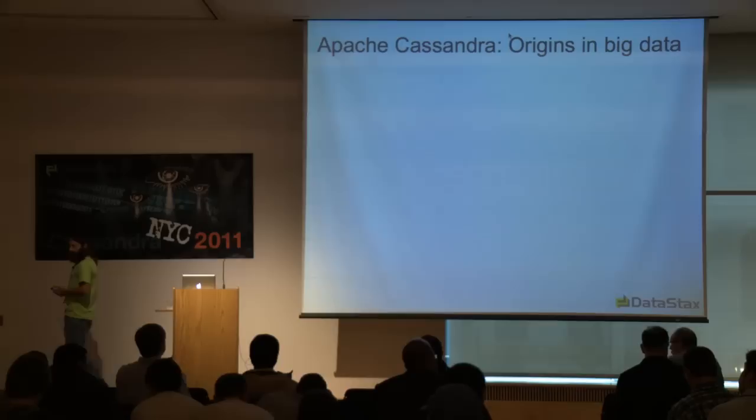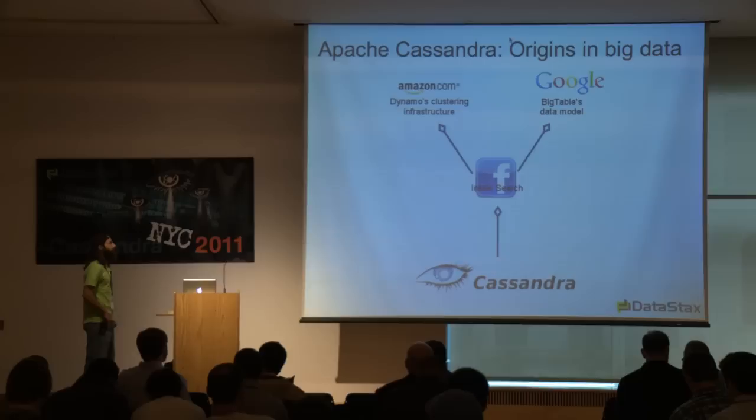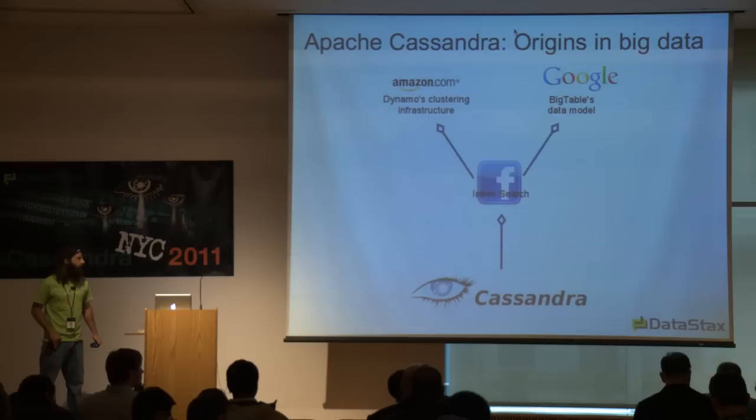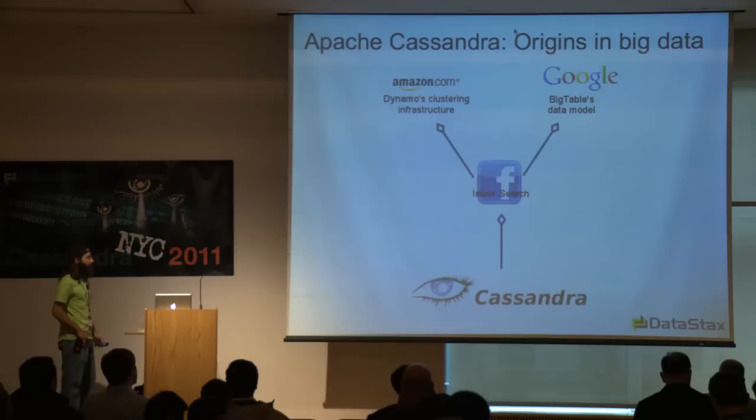Let's look at where we came from. The origins of Apache Cassandra were designed to solve big data problems. They came out of a combination of Amazon's thoughts on how to build a distributed hash table appropriate for a database, Google's thoughts on how to store massive amounts of data in a structure that can be searched easily, and Facebook put those two things together in a research project for inbox search.